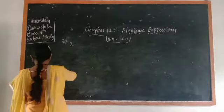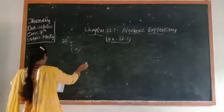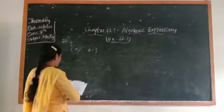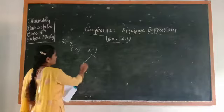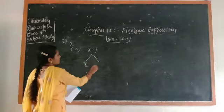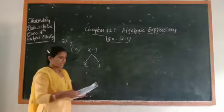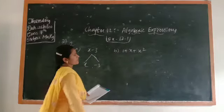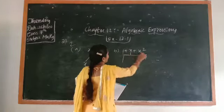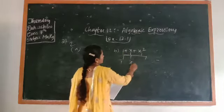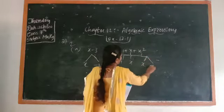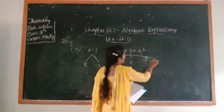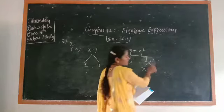In the second part, take the first example: x minus 3. Here x is the variable and −3 is the constant term. In the next example: 1 + x + x², there are three terms. The terms are 1, x, and x². For the term x², you write x times x, which gives x².